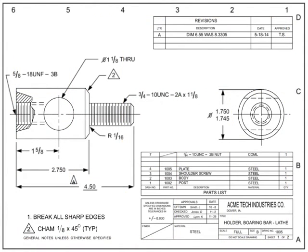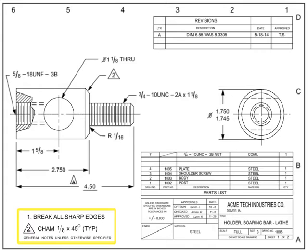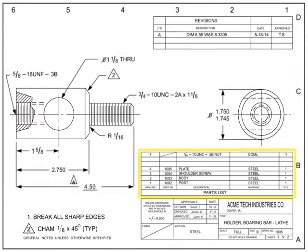Conventional parts of a drawing include the title block, the revision block, the notes list, the field of the drawing, and the list of materials or parts list.